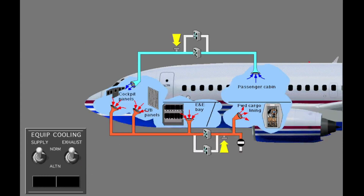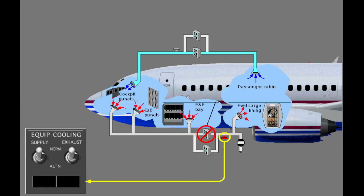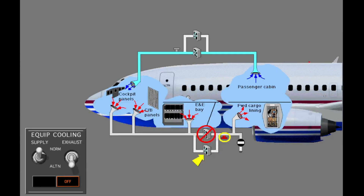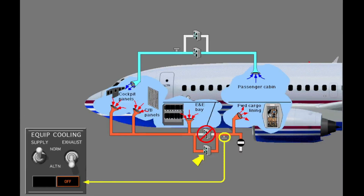There are low air flow detectors in both the supply duct and exhaust duct. If the selected fan does not operate and the air flow stops, the related off-light illuminates. When the off-light illuminates, you select the related alternate fan. The off-light extinguishes after the air starts to flow again. The alternate fan supplies the same quantity of air flow as the normal fan.